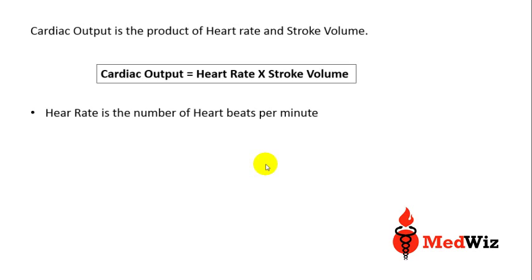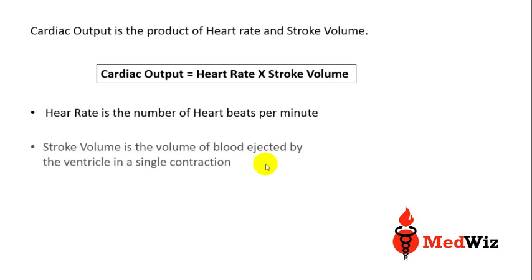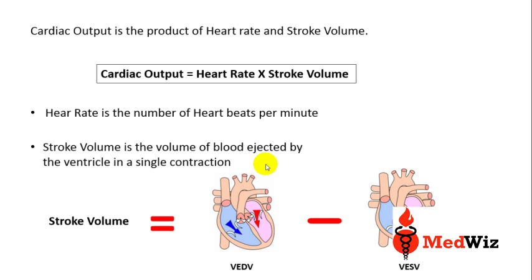In this formula, heart rate is the number of heartbeats per minute. Stroke volume is the volume of blood ejected by the ventricle in a single contraction. To understand stroke volume, it is the difference between the ventricular end diastolic volume and the ventricular end systolic volume. The ventricular end diastolic volume is the volume of blood accumulated in the heart ventricle at the end of diastole.